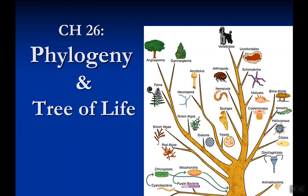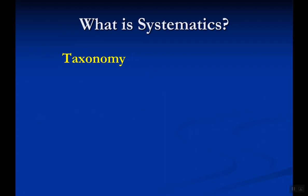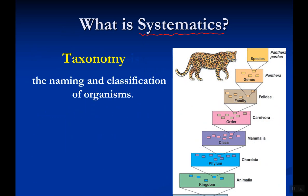Welcome to Chapter 26 — this will be the last chapter we cover before Test 1. The chapter starts off talking about systematics, but to understand systematics we first need to know what taxonomy is. Taxonomy is the science of naming and classifying organisms.